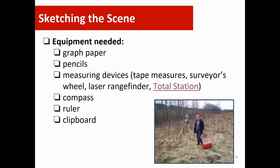Equipment needed for sketching the crime scene includes graph paper, pencils, and measuring devices like tape measures and surveyor wheels. Many investigators use digital or laser range finders. A really cool contraption is the total station, which does a three-dimensional scan of the crime scene and creates an elaborate three-dimensional digital version. To determine directionality, you need a compass, and of course rulers and maybe a clipboard.